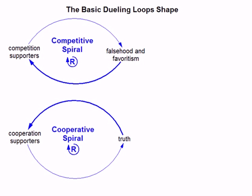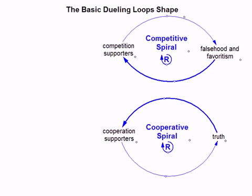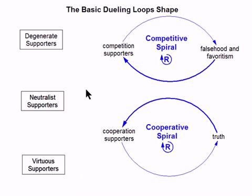Now let's draw the three stocks that form the very backbone of the basic dueling loop shape. Let's move these two loops over to the right, and now we're going to add the three stocks. A degenerate supporter is similar to a competitive supporter but at a higher level of abstraction. The definition of degenerative philosophy from the dueling loops book is a comprehensive rationale and value set for optimizing the system for a special interest few. Virtuous supporters are just the opposite — the equivalent of progressive philosophy, defined as a comprehensive rationale and value set whose goal is optimizing the human system for the common good of all.